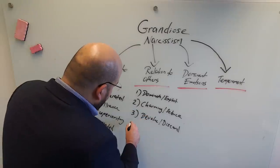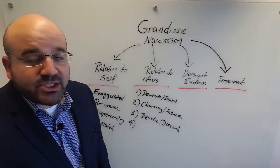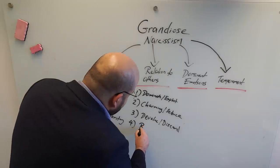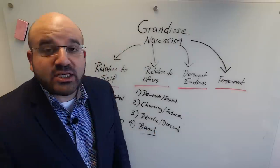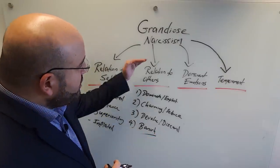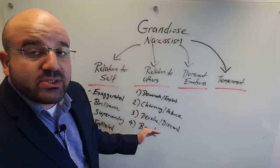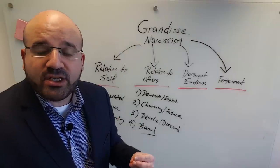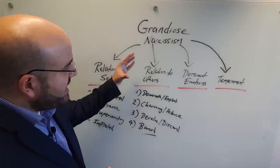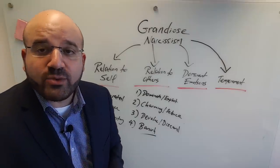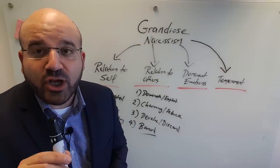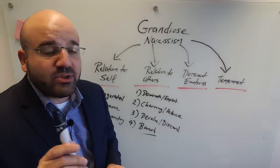Once they've ascended the dominance hierarchy and used the individual they've dominated, charmed, or a combination of both, that person is devalued and discarded. A fourth way grandiose narcissists relate to others is to banish the person or act as if they do not exist — adopting a condescending attitude where the other person is not even acknowledged. This relationship to others is driven by a psychology that is dominance-focused, seeking control, authority, and power.